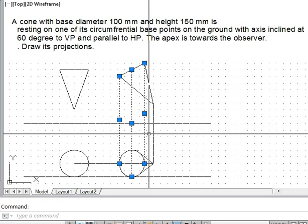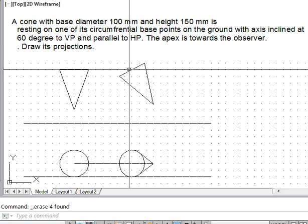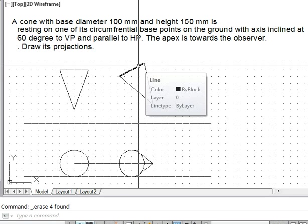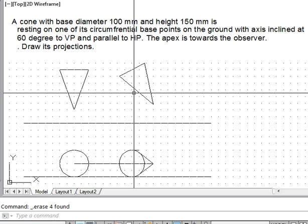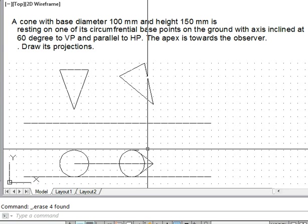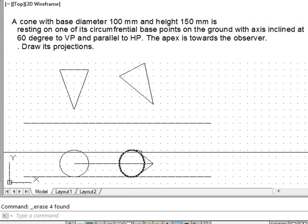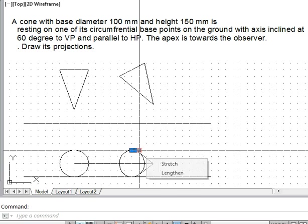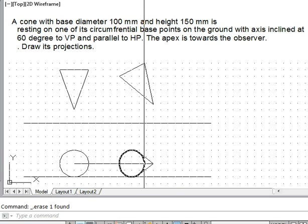But you note that the base is away from the observer, so if some portion of the base is blocked by the solid, that portion will be removed. That means this portion coming between this line and this line needs to be removed.